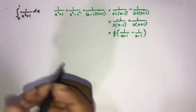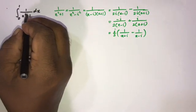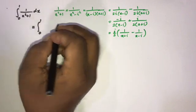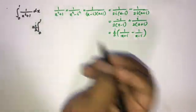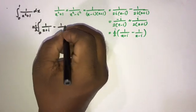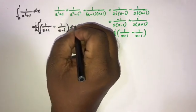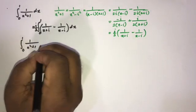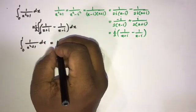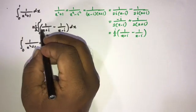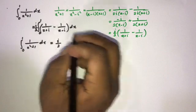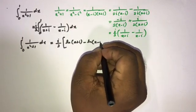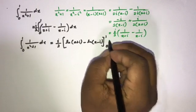So our integral from 0 to 1 of 1 over (x squared plus 1) dx equals i over 2, which is a constant we can write outside the integral sign, times the integral from 0 to 1 of [1 over (x plus i) minus 1 over (x minus i)] dx. This evaluates to i over 2 times [ln(x plus i) minus ln(x minus i)] from 0 to 1.